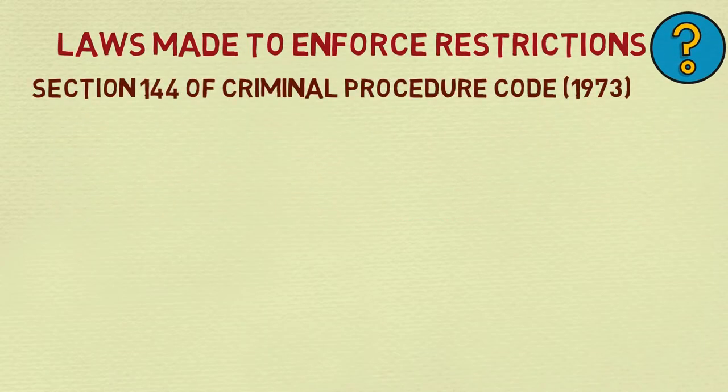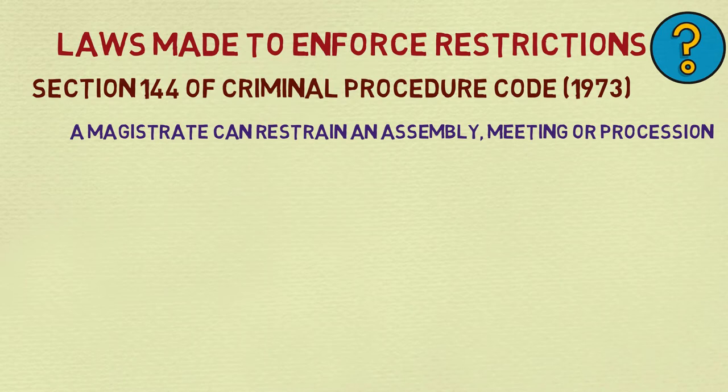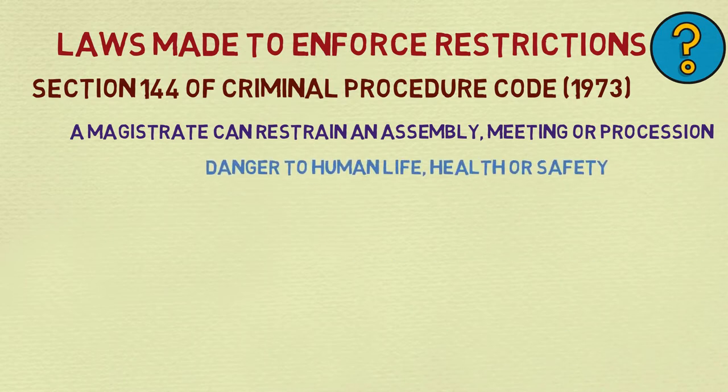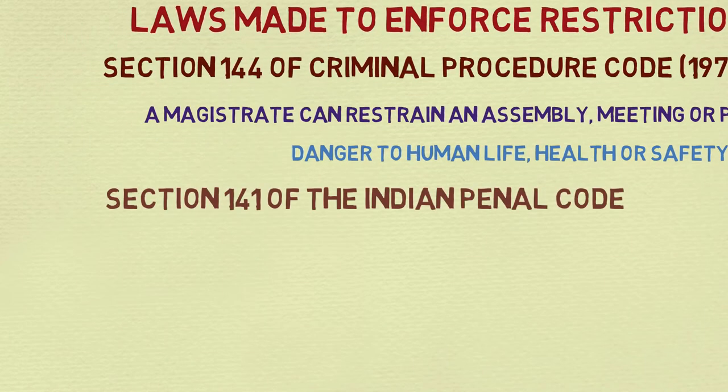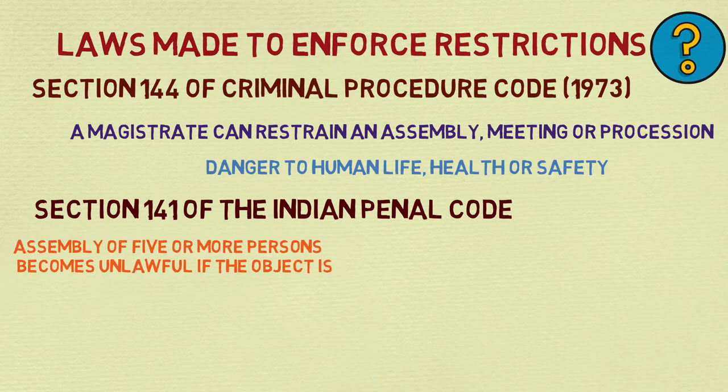To enforce these restrictions, some laws are passed. Under Section 144 of the Criminal Procedure Code, a magistrate can restrain an assembly, meeting, or procession if there is a risk of danger to human life, health, or safety. Under Section 141 of the Indian Penal Code, an assembly of five or more persons becomes unlawful if certain objectives are met.